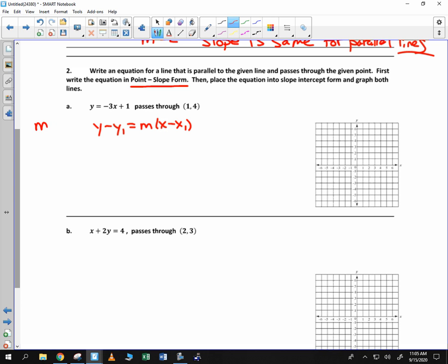So every time we write an equation for a line, we need slope and a point. It says that this line passes through 1, 4, and it's parallel to this guy. Well, if it's parallel to y equals negative 3x plus 1, the slopes are the same. So the slope will be negative 3.